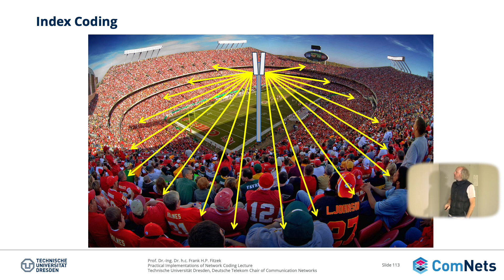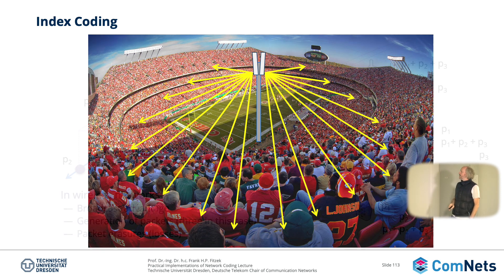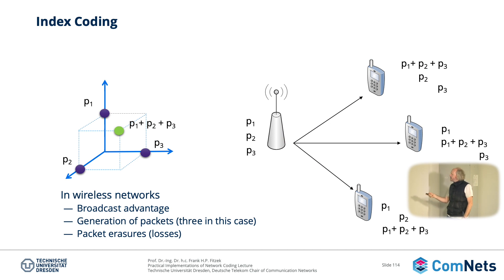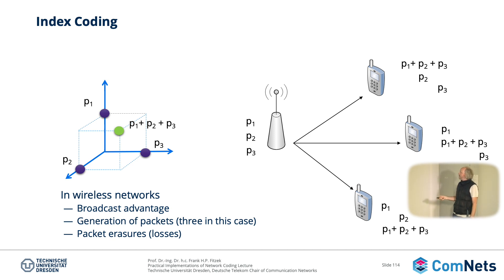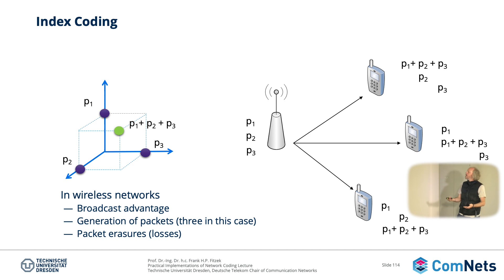Now what happens if something goes wrong in your multicast? Imagine you have the base station and you have three packets. The first time you send packet one to everybody, but station number one did not get it — this happens in wireless communication. Then you send packet two and packet three, and there are holes: station three did not get packet three, station two didn't get packet two, and so on.